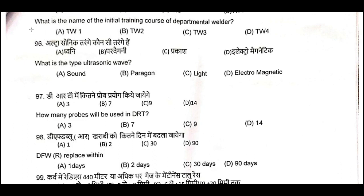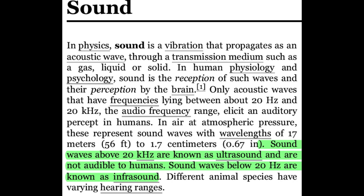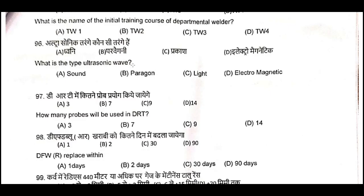Question Number 96: What is the type of ultrasonic wave? Ultrasonic wave is a sound wave. Sound waves are of three types: Number 1 Longitudinal, Number 2 Transverse, Number 3 Surface waves. Sound waves also classified by frequency — infrasonic: up to 20 Hz; sonic (audible): 20 Hz to 20 kHz; ultrasonic: frequency more than 20 kHz. Question Number 96, A is the correct answer.